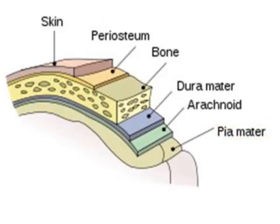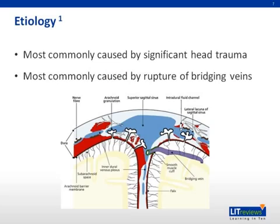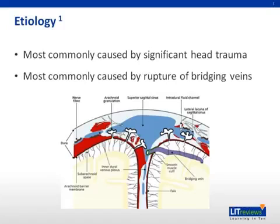The distinction between an acute versus chronic subdural hematoma is somewhat arbitrary, but can be helpful to communicate to other physicians as the management and treatment can vary depending on the age of the bleed. An acute subdural hematoma is defined as occurring within 14 days of traumatic head injury. The most common cause is significant head injury — traumatic brain injury — often from a blunt blow to the skull. The most common source of blood is from tearing of bridging veins within the subdural space.